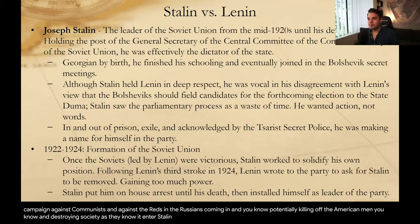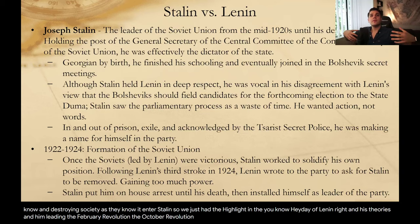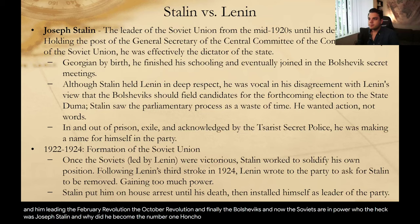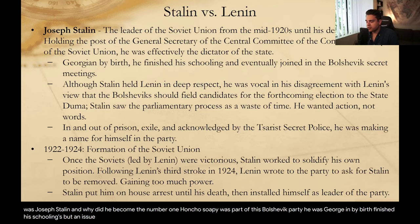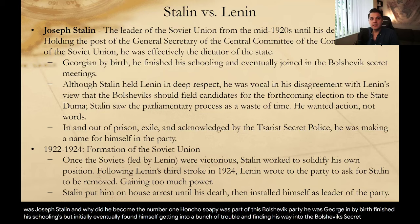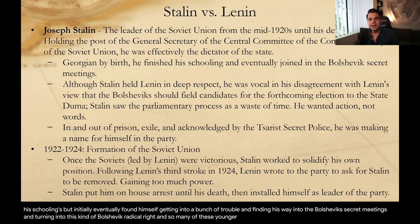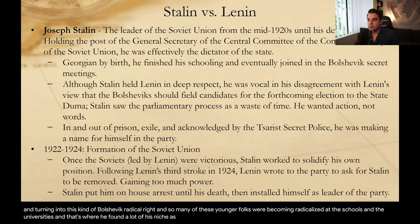Enter Stalin. We just had the highlight and heyday of Lenin and his theories, him leading the February Revolution, the October Revolution, and finally the Bolsheviks — and now the Soviets are in power. Who was Joseph Stalin and why did he become the number one honcho? He was part of this Bolshevik party, Georgian by birth, who eventually found himself getting into a bunch of trouble and finding his way into the Bolshevik secret meetings, turning into this kind of Bolshevik radical. Many of these younger folks were becoming radicalized at schools and universities, and that's where he found his niche.